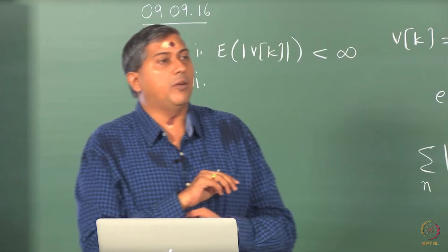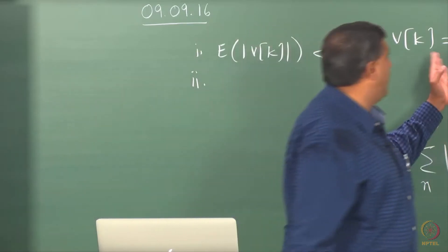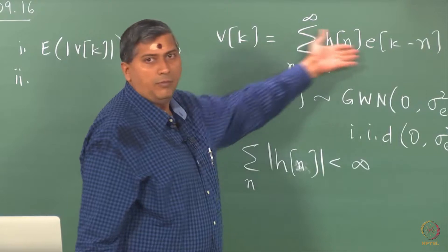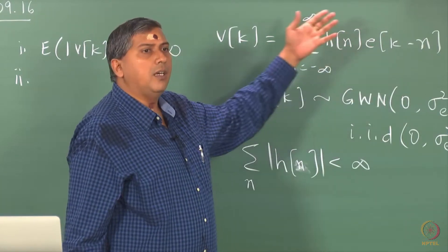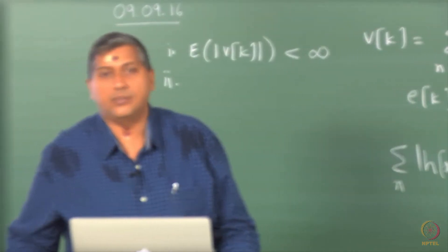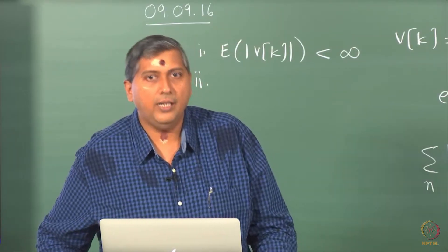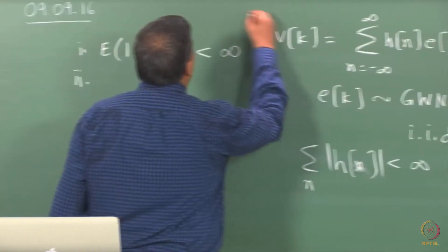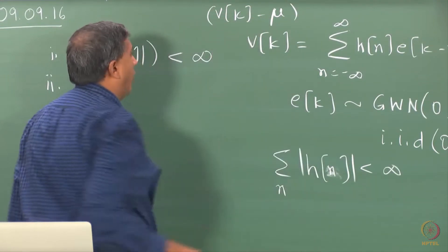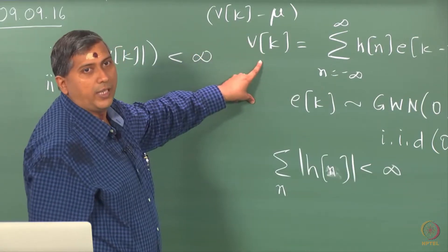Now, the other requirement, remember we said Vk should be stationary. Of course, we can straight away see that the expectation of Vk is 0 given that Eks are 0 mean variables. It is likely that the process that you are looking at does not have a 0 mean. In that case, what do you do, right? All you have to do is replace Vk with Vk minus mu, assuming it to be stationary already. So the model would be for Vk minus mu in place of Vk.